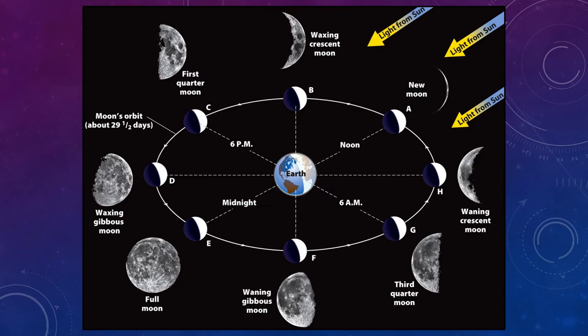The figure shows the relationship between the lunar phase visible from Earth and the position of the moon in its orbit. When the moon is at position A, that is the new moon. We see it in roughly the same direction in the sky as the sun, so the dark hemisphere of the moon faces the Earth. Since a new moon can only be located near the sun in the sky, it rises around sunrise and sets around sunset.